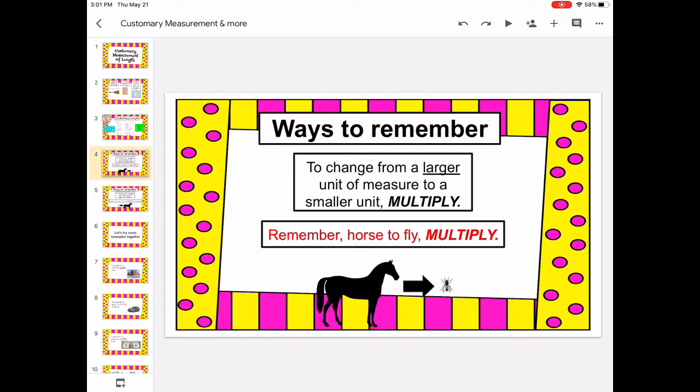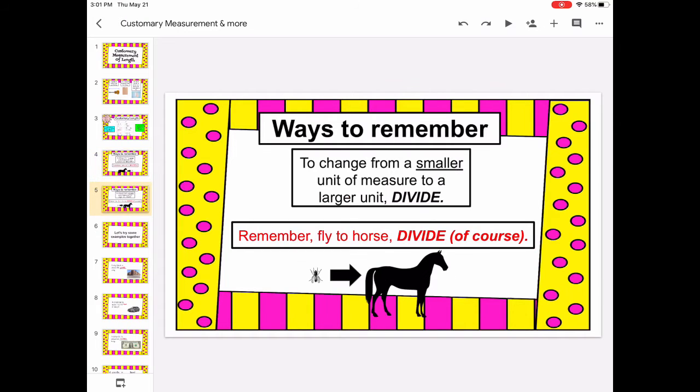So remember, horse to fly, large to small, multiply. Fly to horse, small to large, divide of course. This will stick it in your mind mostly because it's silly but you can see the objects in your mind very clearly.